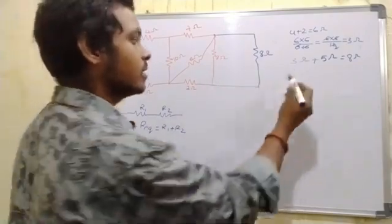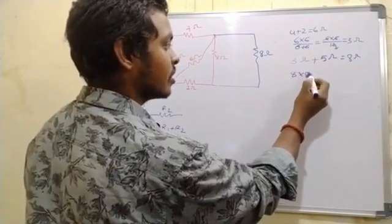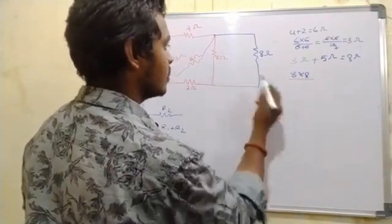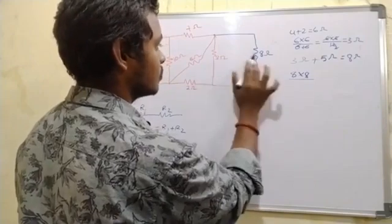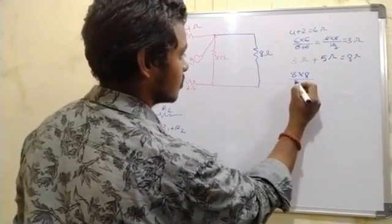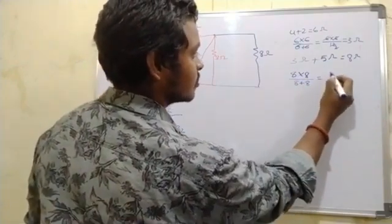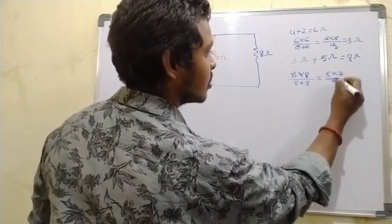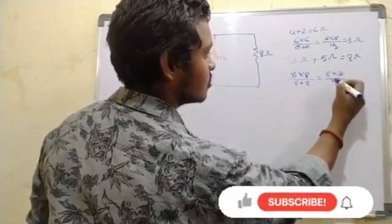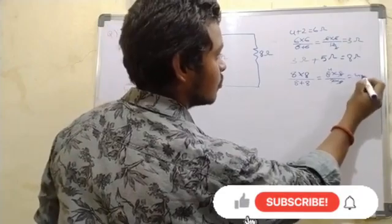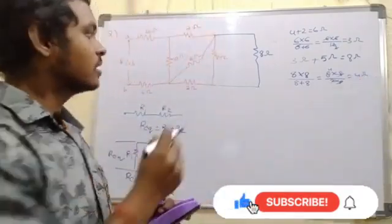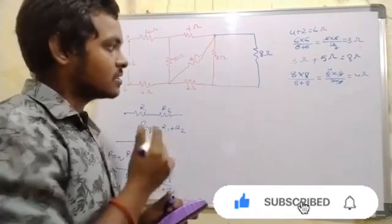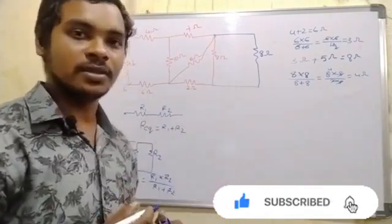8 ohms is in parallel. We compute 8 into 8 divided by 8 plus 8, which gives 4 ohms as the final result. So 4 ohms is parallel here.